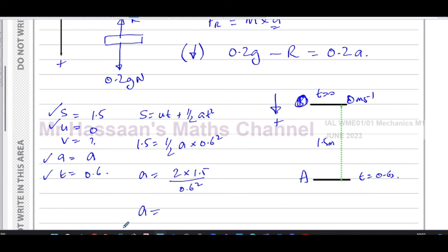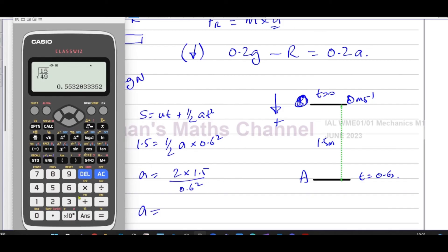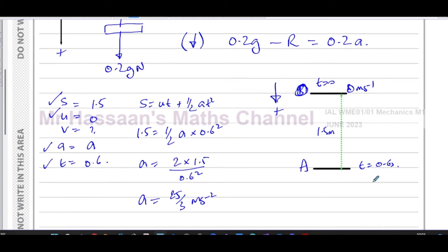So the acceleration is going to be, if we work that out, that's going to be three over 0.6 squared. Two times 1.5 is three, of course. So that's going to give us 25 over three. I'll leave it like this, 25 over three meters per second squared. I'll leave it like this because it's an exact value. And then we'll use that in our equation now.